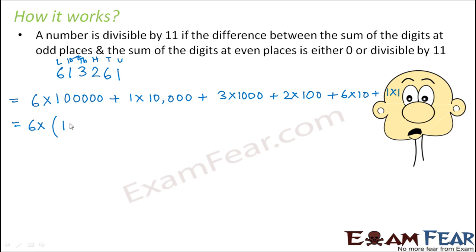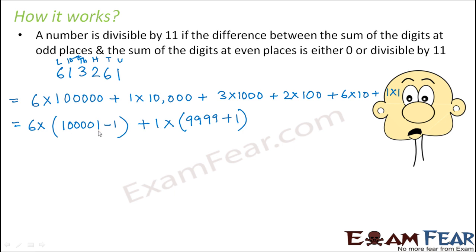So 1,00,000 can be written as (1,00,001 minus 1). Now what about 10,000? We could write it as 10,001 minus 1, but 10,001 is not divisible by 11, so we prefer to write it as 9,999 plus 1 because 9,999 is divisible by 11. And 1,001 is divisible by 11. For 1,000, writing 1,001 minus 1 works because 1,001 is divisible by 11. For 100, we write it as 99 plus 1 because 99 is divisible by 11. For 10, we write it as 11 minus 1 because 11 is divisible by 11.